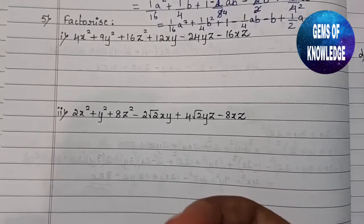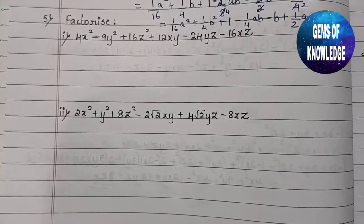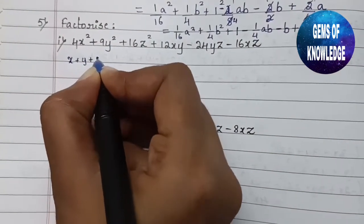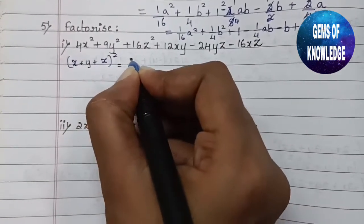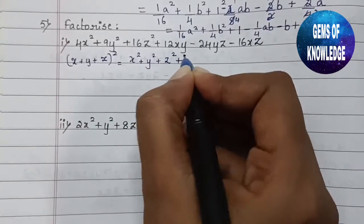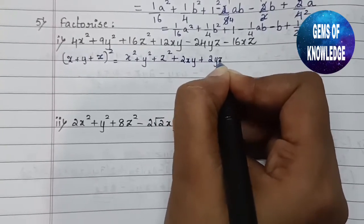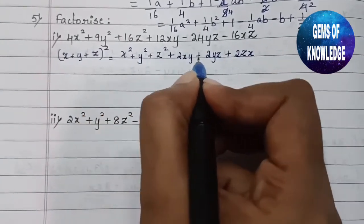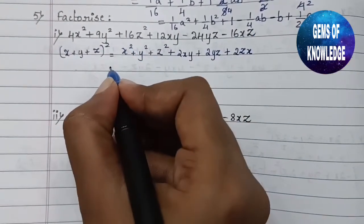You should have gone through all the identities, including the fifth identity, which states that (x + y + z)² = x² + y² + z² + 2xy + 2yz + 2zx. This is the identity we will use. The right-hand side of this identity matches the form given in our question, so we just need to identify what x, y, and z correspond to.